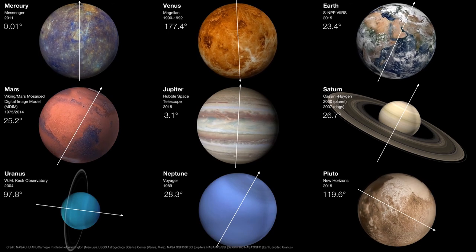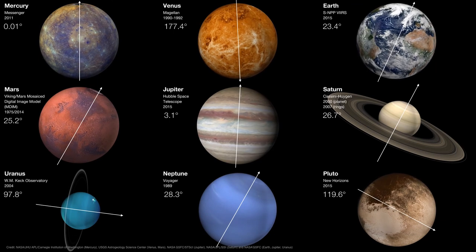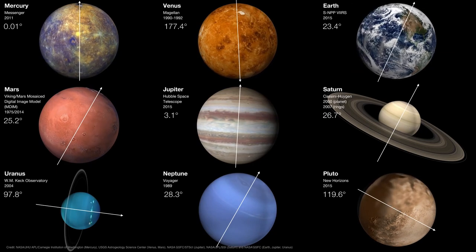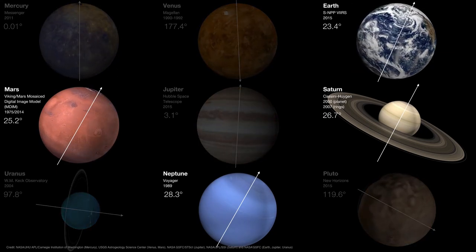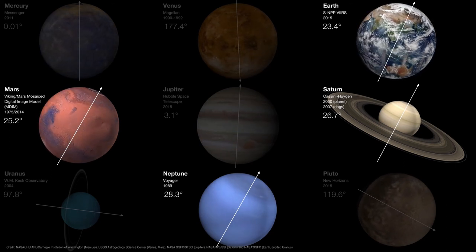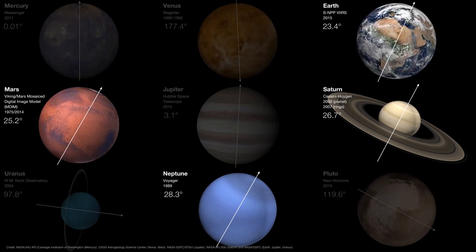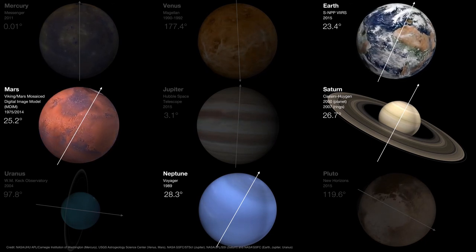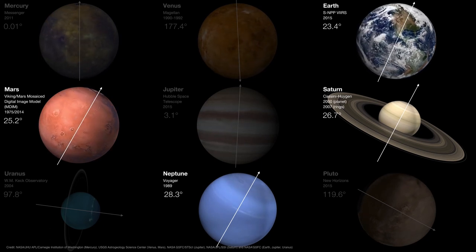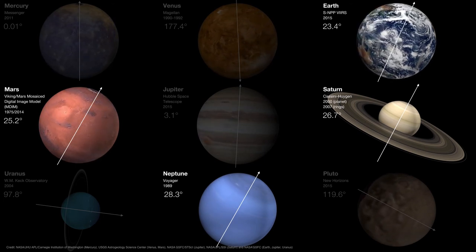Do other planets have seasons? It turns out some do and some really don't, because we have a wide variety of obliquities — axial tilts — in the solar system. Mars, Saturn, and Neptune have obliquities relatively similar to Earth's. There will be some variations in seasonal temperatures, not least because they all orbit the sun farther away than Earth, but their obliquities mean that the variations from season to season are on the same degree that we experience here on Earth.